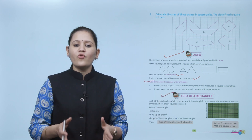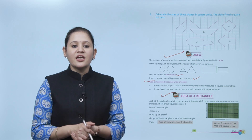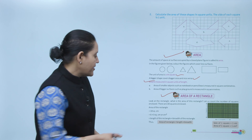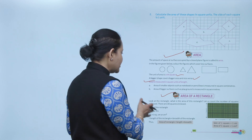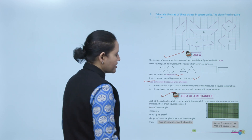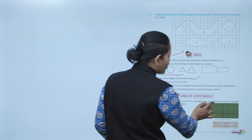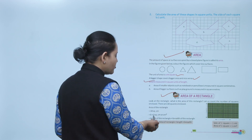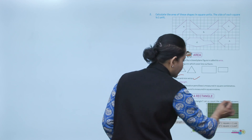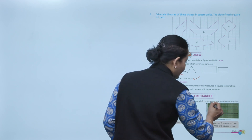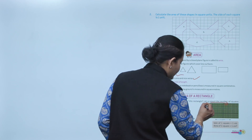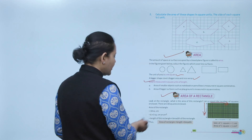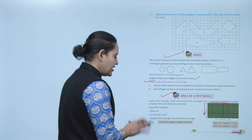Look at the rectangle: what is the area of the rectangle enclosed? There are 18 squares enclosed, so the area of the rectangle equals 18 square centimeters — because the total square count is 18.